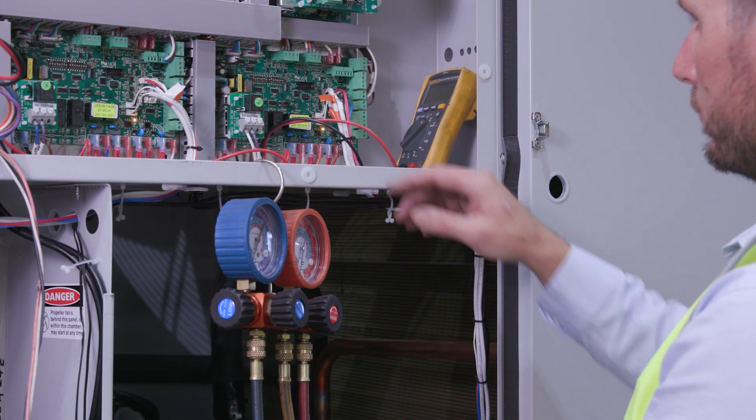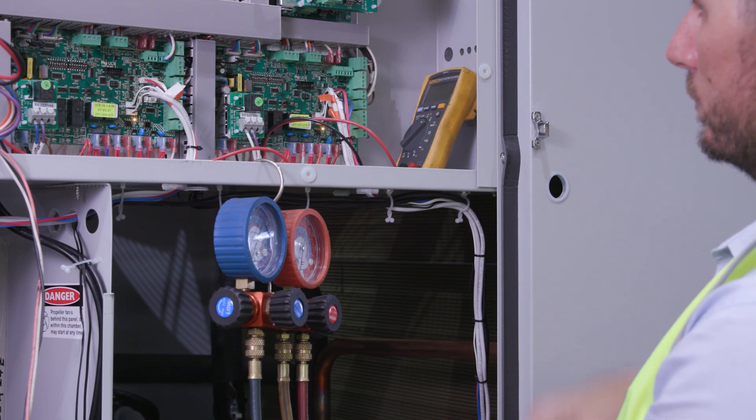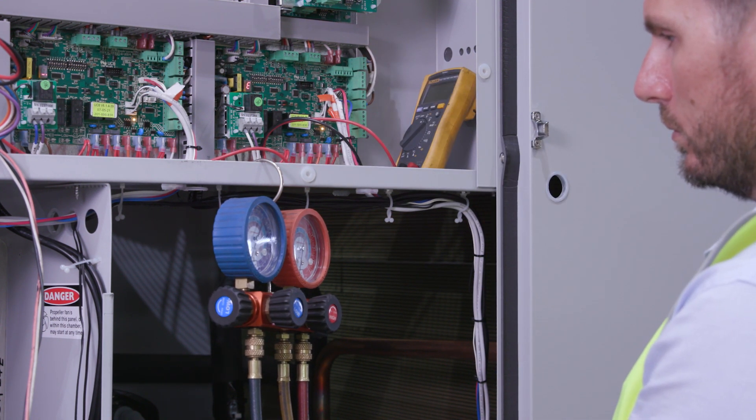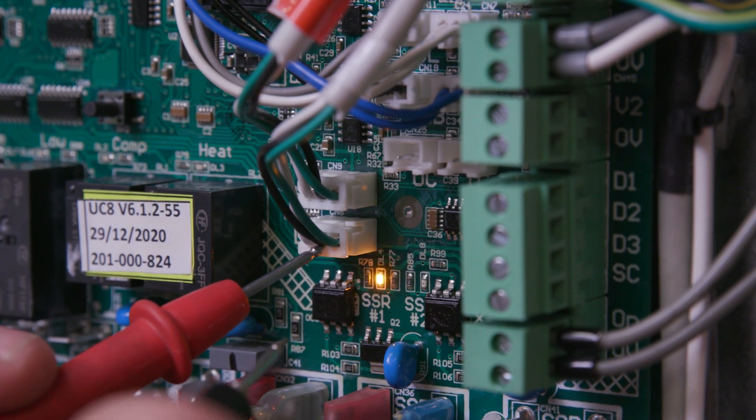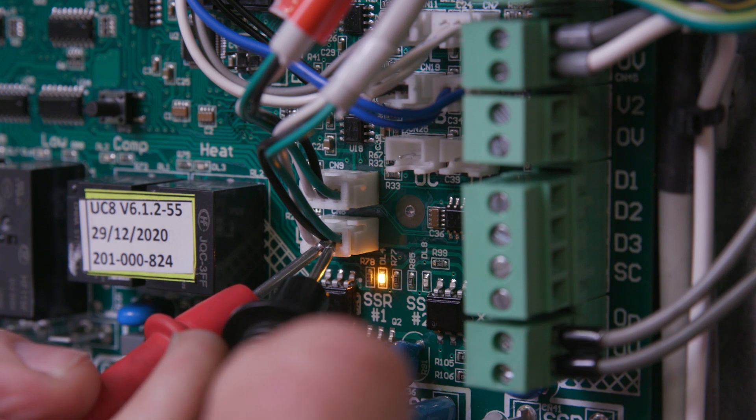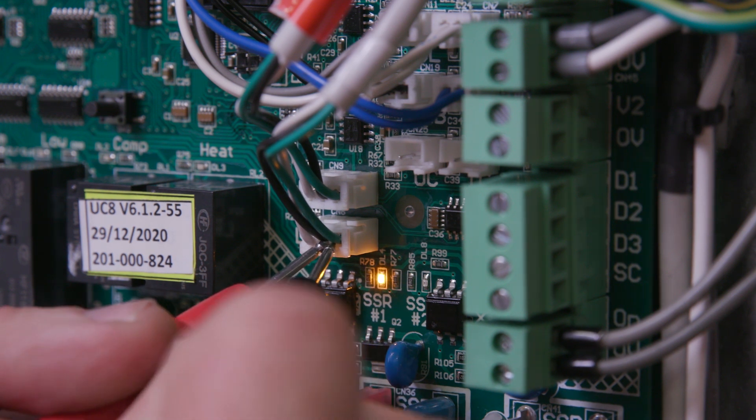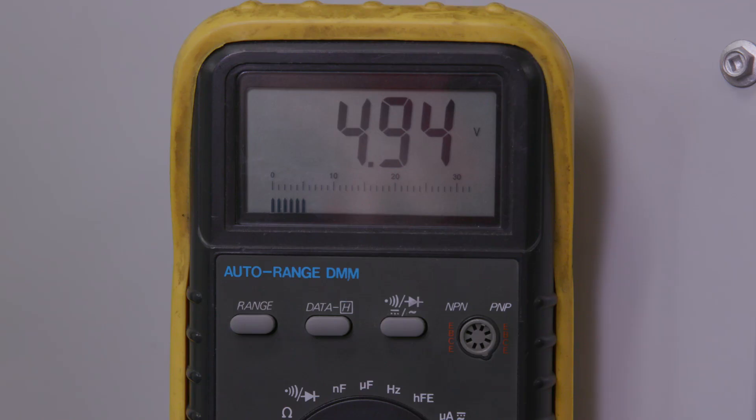Confirm the accuracy of gauge pressure against the UC8 transducer readings. With the unit controller energized, check for a 5 volt DC power supply to the transducer on the green and black wire at the transducer lead. The absence of 5 volt DC indicates the failure of the unit controller board.